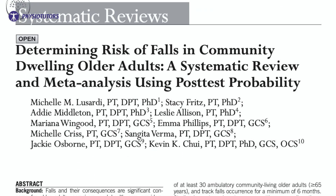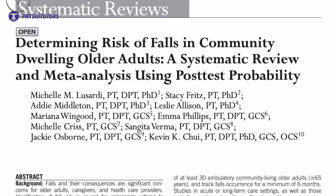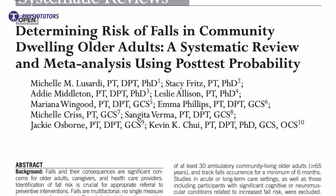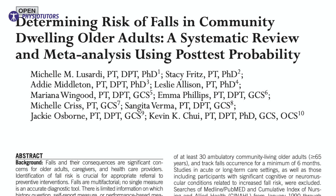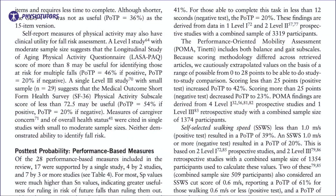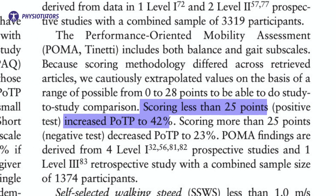The Tinetti assessment is often used to quantify fall risk, but what does the evidence suggest? Sardi et al. performed a meta-analysis to measure the post-test probability of a fall in community-dwelling elderly. They found that scoring less than 25 points out of 28 increased the post-test probability of a fall to 42%, based on a pre-test probability of about 30%. However, other studies suggest that the evidence is unclear.